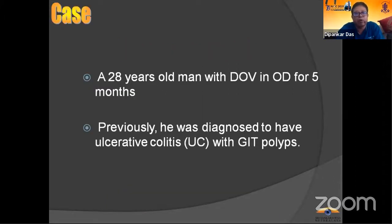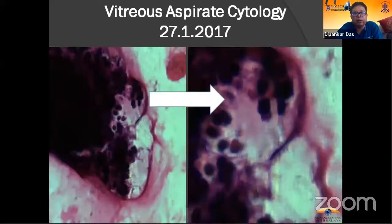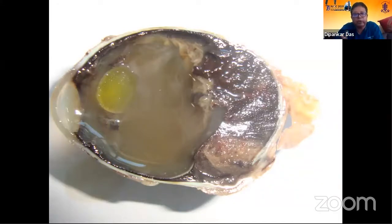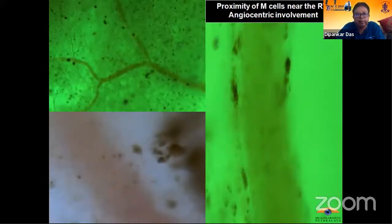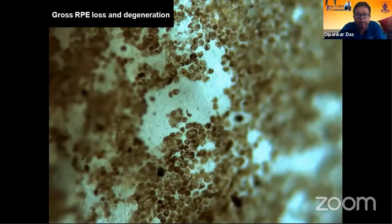The third case is a 28-year-old man with dimness of vision in the right eye for five months. He was previously diagnosed with ulcerative colitis with GIT polyp. The anterior chamber was quiet. Vitreous cells were large in the left eye at 2+. Ocular imaging showed a diffuse choroidal mass in the right eye. Paracentesis done by a vitreoretinal surgeon showed atypical cells. On follow-up, ultrasound showed a laterally spreading tumor, and the eye was enucleated. You can see heterogeneous tissue with the pigmented tumor and retinal detachment.